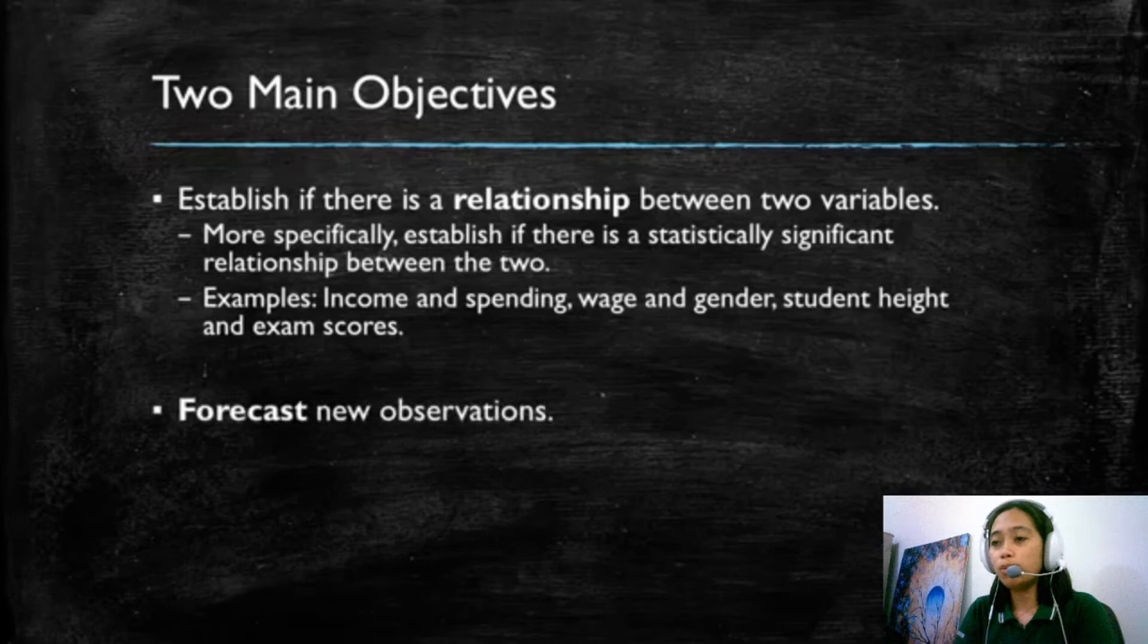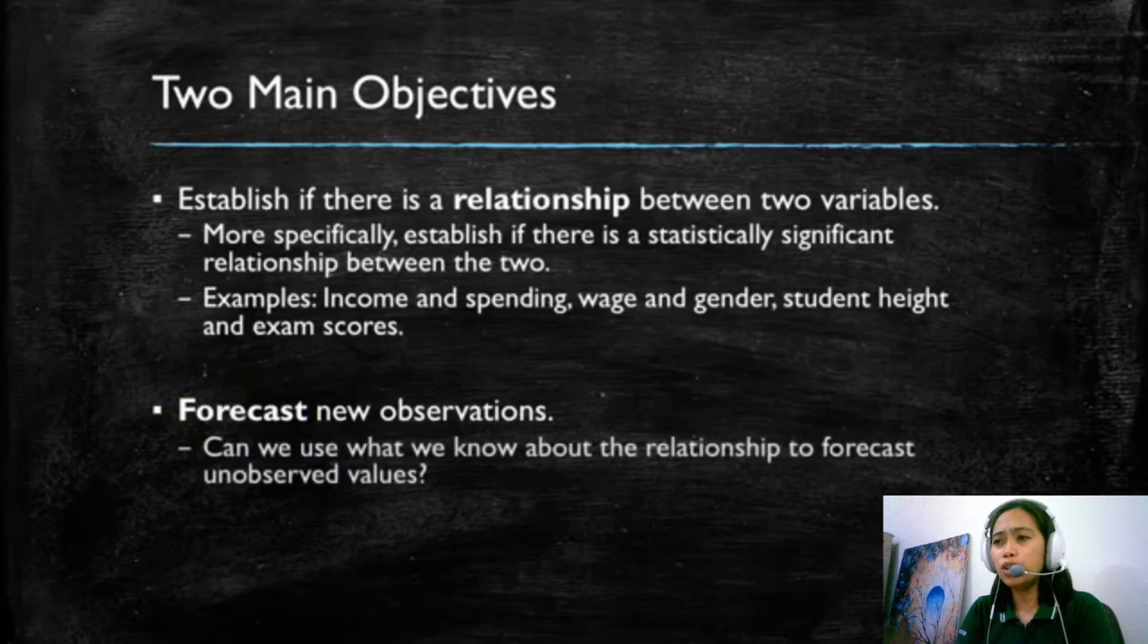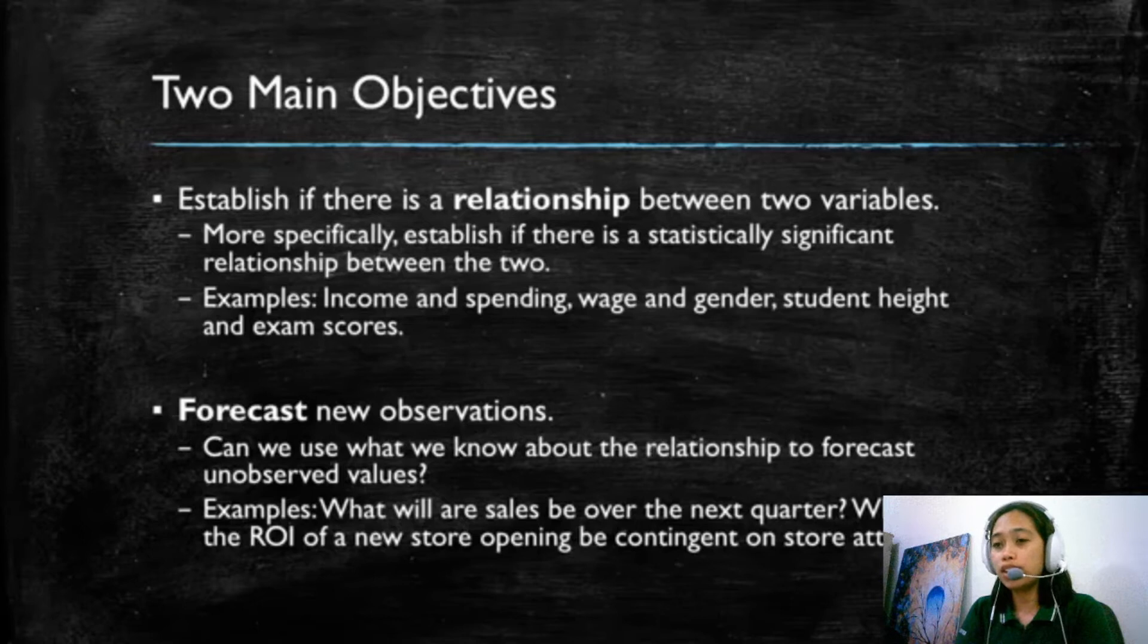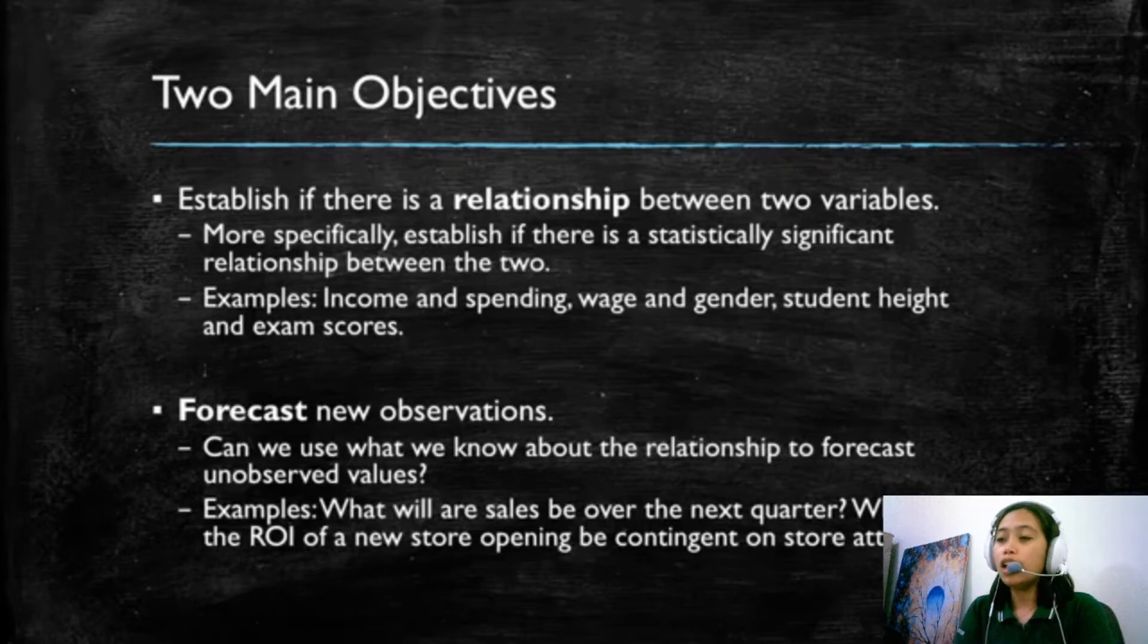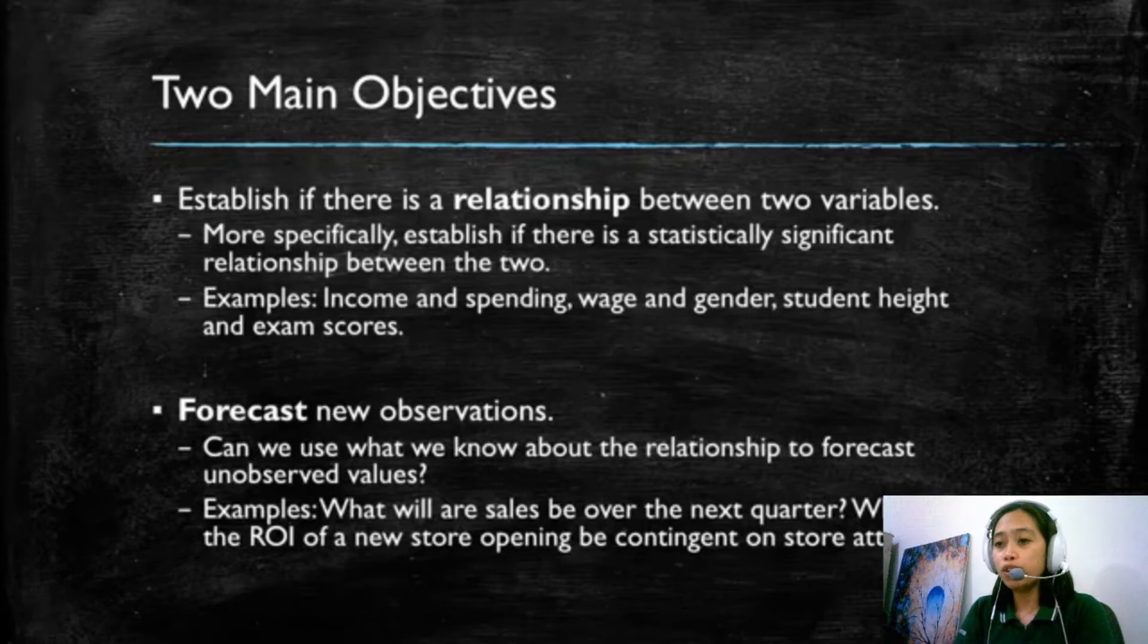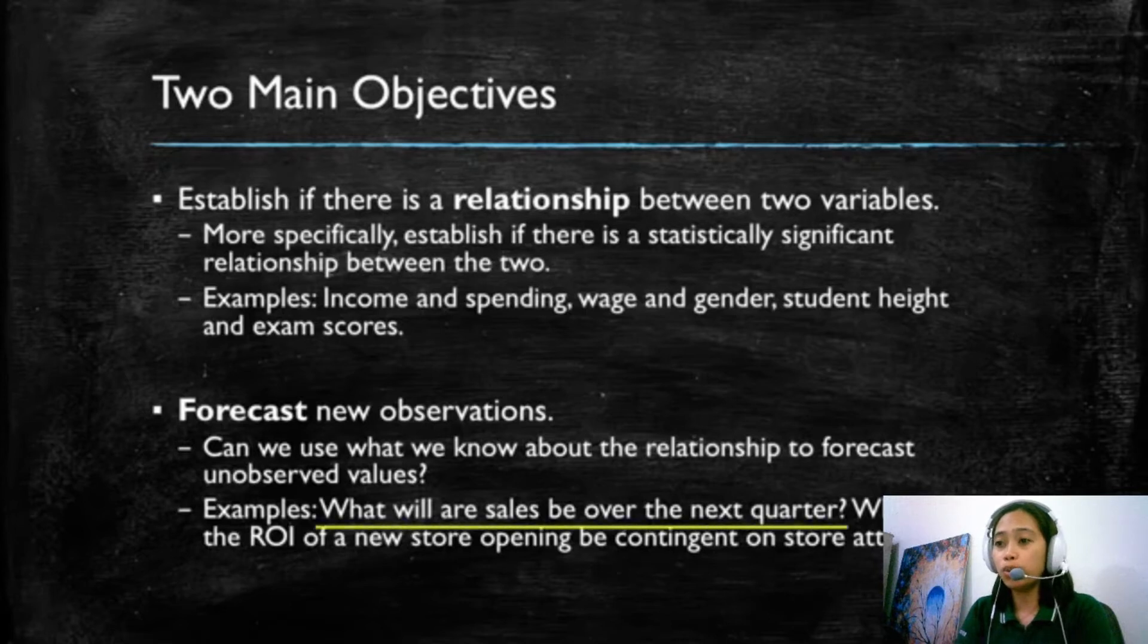Our second objective is to forecast new observations and what we mean here is, can we use what we know about an existing relationship to forecast unobserved values? Let me give you a couple of examples. For instance, if we know that our sales tend to grow over time and we actually even know how strong this relationship is and we know how fast our sales will grow, we could use this information to predict or to forecast what our sales will be over the next quarter.